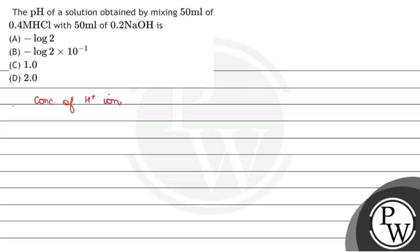The excess H+ ions present divided by total volume. The remaining moles are 0.01 divided by total volume. The total volume is 0.05 plus 0.05. It is equal to 0.01 divided by 0.1. So, H+ ion concentration will be 0.1.